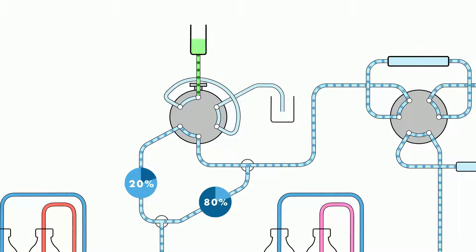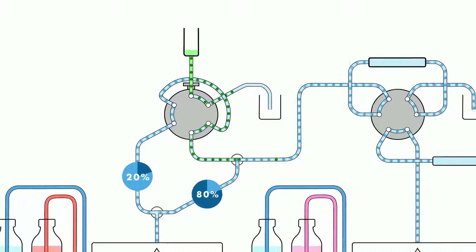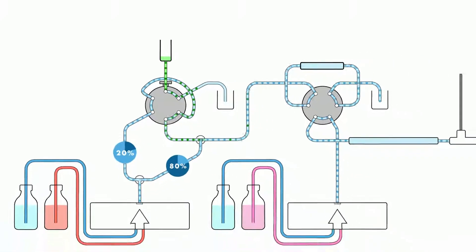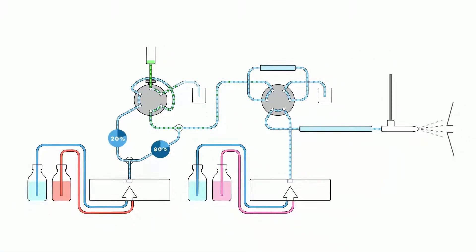After the trapping column has been washed with organic and equilibrated with water using the zirconium SP pump, the sample is loaded into the loop and transferred to solid phase extraction. The smaller part of the split flow is used to transport the sample from the loop. Then it is diluted using the larger part of the split flow before it reaches the trapping column where the actual solid phase extraction takes place.